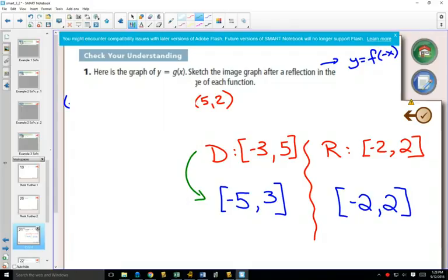So here, negative 3, when you multiply that by a negative, it becomes positive 3. And 5, when you multiply that by a negative, becomes negative 5. And everything gets switched because your biggest values now become your smallest values.